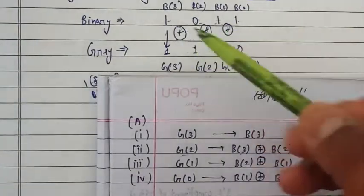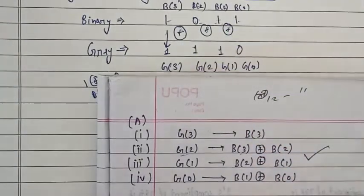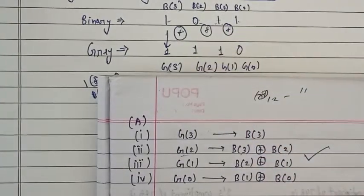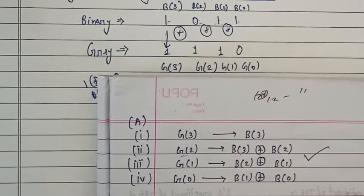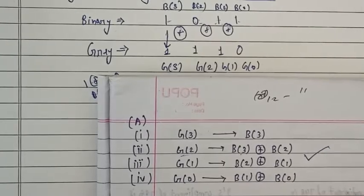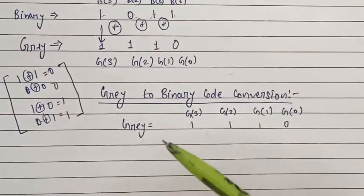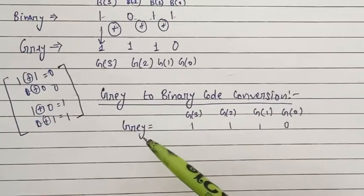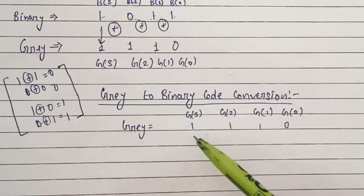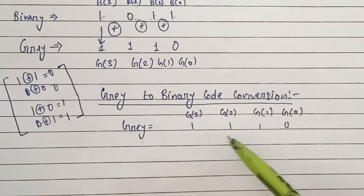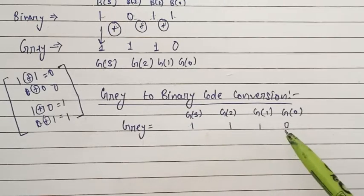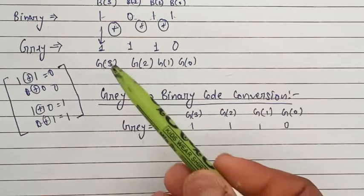Now let's see how to do the gray to binary code conversion. Our example uses gray code 1110 — which is exactly the same result we got — so we can cross-check whether our answer is right or wrong.